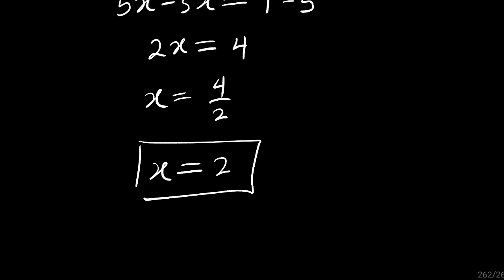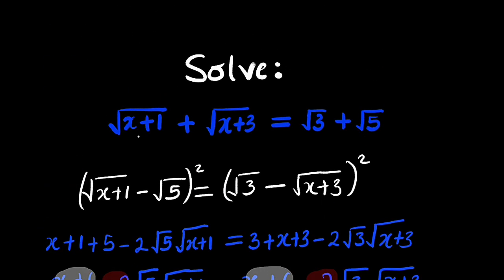But wait. Will x equal to 2 satisfy the original equation? That's what we need to verify. If x is equal to 2, you have under the square root, we have 2 plus 1 equal to 3. So this is root of 3. If x is 2, you have 2 plus 3 equal to 5. So the whole of this is root of 5. Yeah, they are exactly the same because you can see even to the right hand side, we have root of 3 plus root of 5. And hence, x equal to 2 is said to be the real solution for this radical equation.